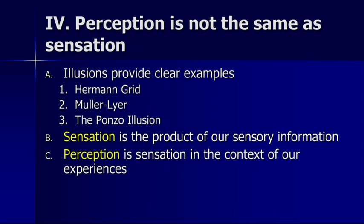All of these illusions provide clear examples that perception is sensation in the context of our experience, whereas sensation is the product of our sensory information. While perception arises from sensation, it is not a direct representation of our sensations. What we get from perception has much more to do with our experiences, our neural structures, and our expectations — all of which play a great role in how we perceive size and distance.